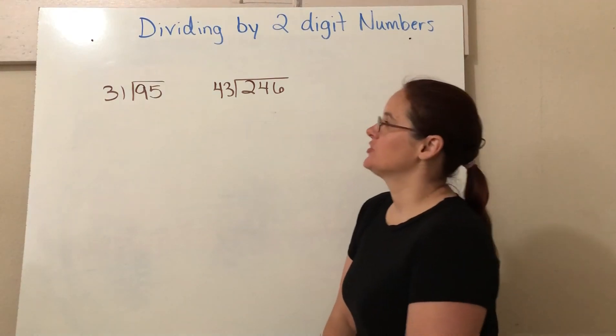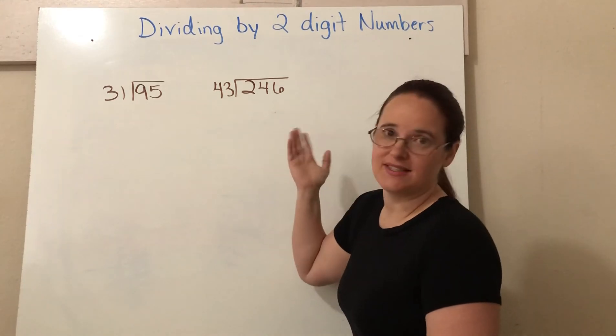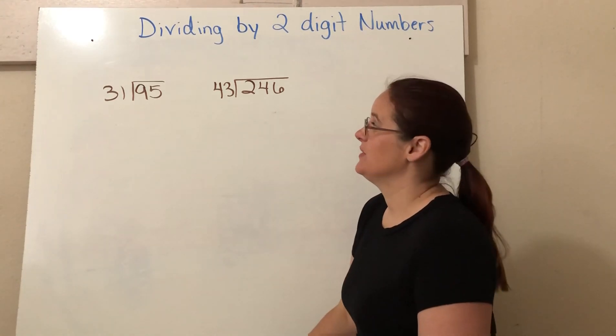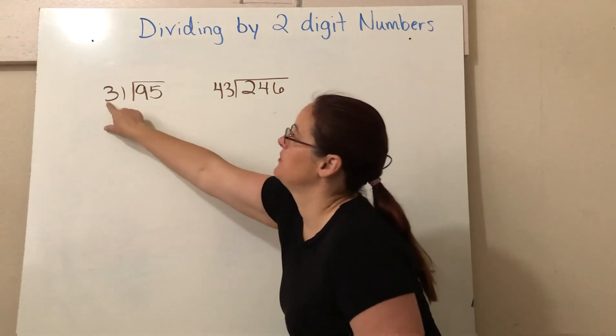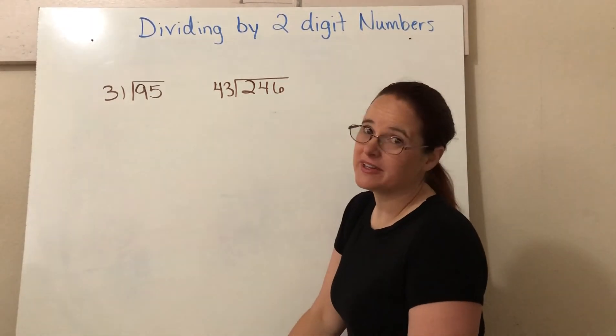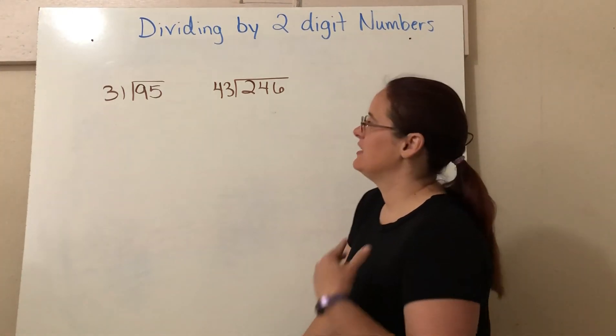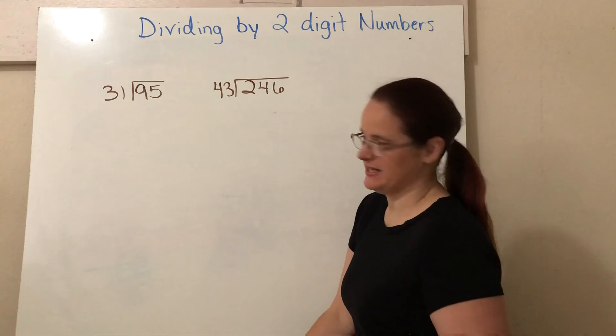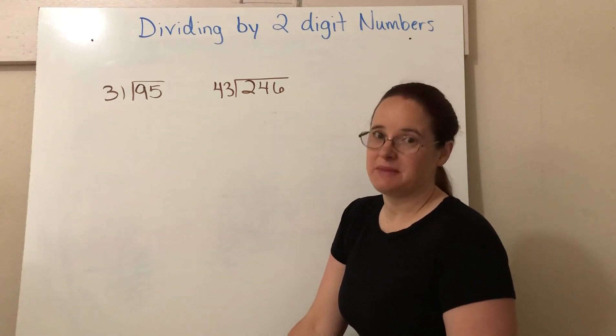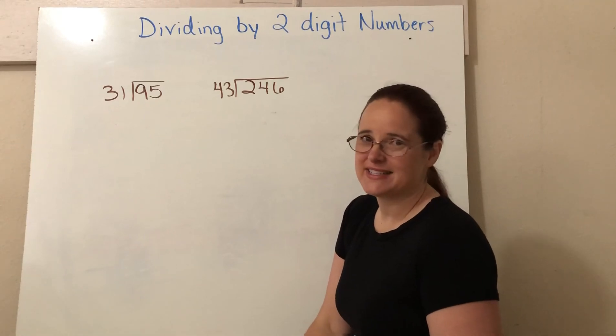Okay, so you all know how to do long division. This is not really that confusing to you, except we've changed this. Now instead of dividing 95 by 3, we're going to divide it by 31. So in order to help us, we're going to use estimation because really I don't want to count by 31 and try to get to 95.